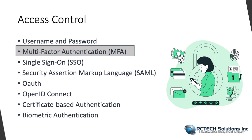Multi-factor authentication (MFA) enhances security by requiring users to provide additional forms of verification in addition to a password. This typically involves something the user knows (the password), something the user has (a token or mobile device), or something the user is (biometric data such as a fingerprint or facial recognition). MFA significantly reduces the risk of unauthorized access even if passwords are compromised.